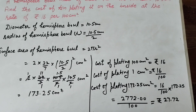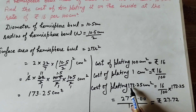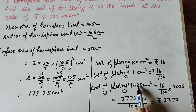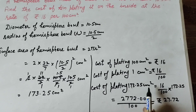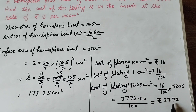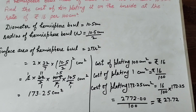The cost of painting the inner part of the hemispherical bowl is rupees 27.72. Thanks for watching — like, comment and share my video, and subscribe to my YouTube channel.